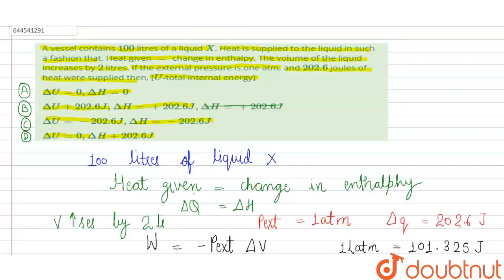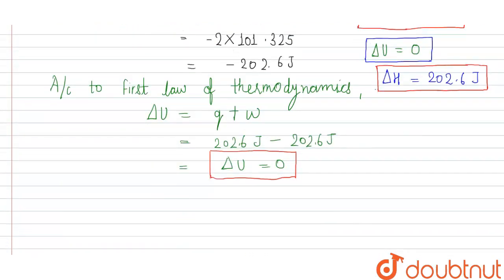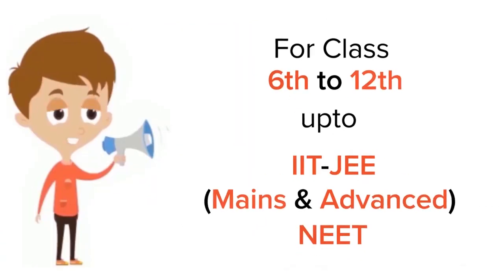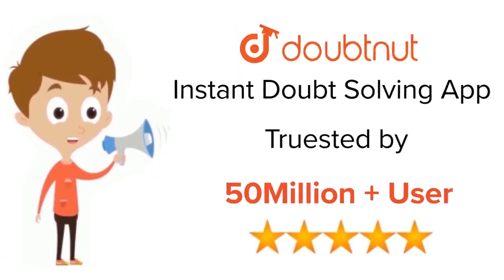So option D is the correct answer: ΔU = 0 and ΔH = 202.6 joules. Thank you students. For class 6–12, IIT-JEE, and NEET level, trusted by more than 5 crore students — download DoubtNet.